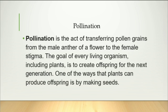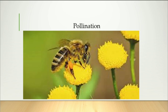Pollination is the act of transferring pollen grains from the male anther of a flower to the female stigma. The goal of every living organism, including plants, is to create offspring for the next generation. One of the ways that plants can produce offspring is by making seeds. This is how pollination occurs.